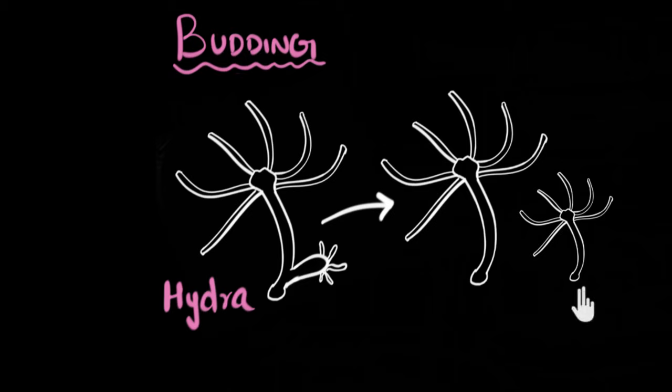Now remember, because this is an asexual reproduction, that means the offspring is going to look exactly the same as its parent because there is no gender over here. So in asexual reproduction, the offsprings look like clones of their parents. Remember that.